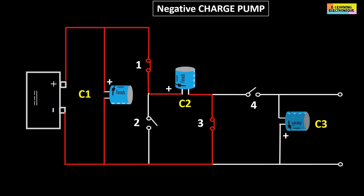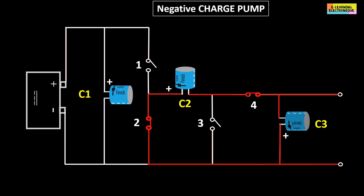When the charge of capacitor C2 is reached, the second phase begins. Switches number 1 and 3 are opened, followed quickly by the closing of switches number 2 and 4.